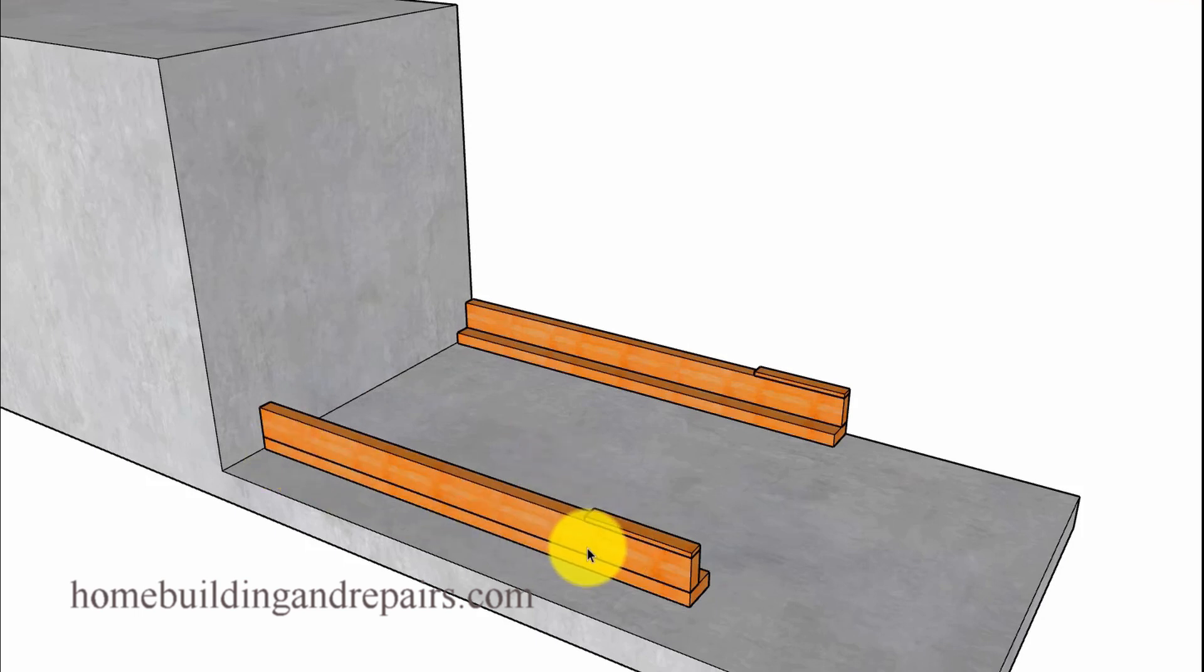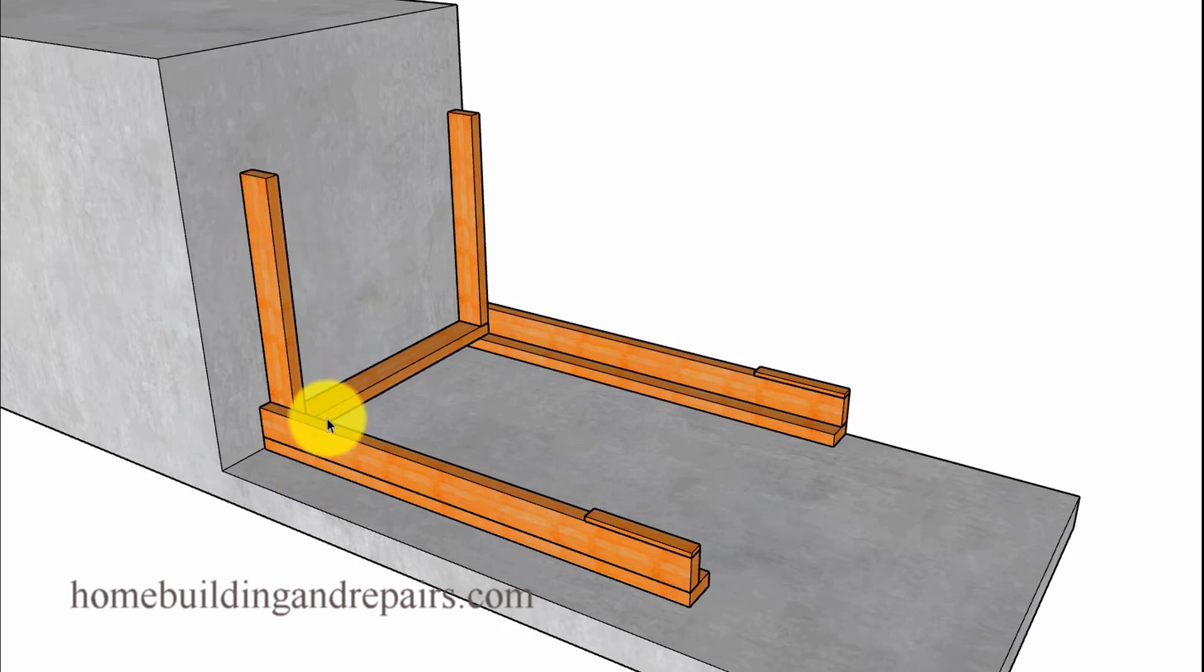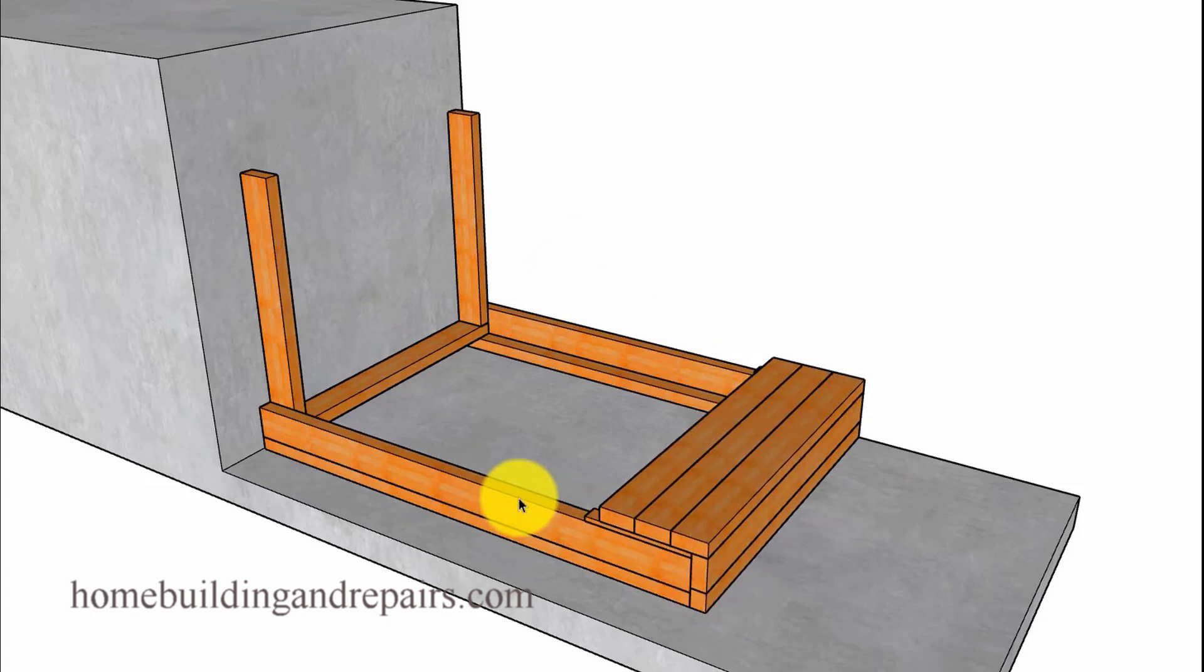So we're going to start with our bottom board here and then put in our braces. And then we're going to put our riser in and then our tread. So we're just going to work our way up. In the other one, if you remember, we didn't put our risers and treads on. We built the side of the stairway first. But this way right here might be a little easier.